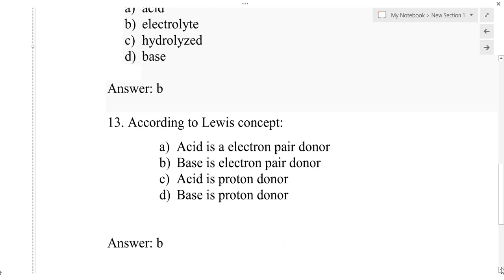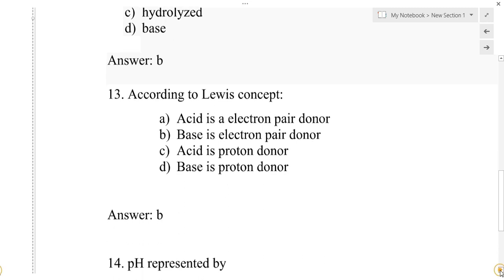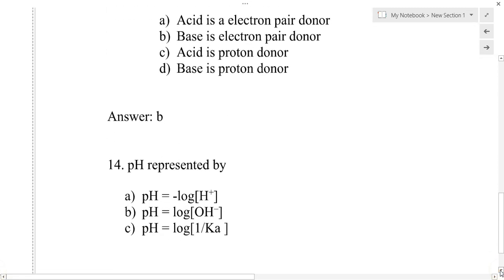According to the Brønsted-Lowry concept, an acid is a proton donor and a base is a proton acceptor. The Arrhenius concept states that an acid generates H⁺ ions and a base generates OH⁻ ions. These are the different types of acid-base concepts.